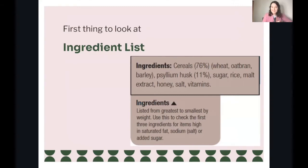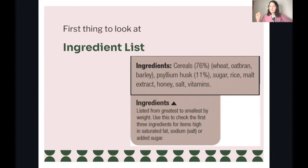Here's the ingredients list. I'm sure this looks familiar whenever you've bought something packaged. It should have an ingredients list on there. In this example, you can see cereals at 76%. The very first thing listed is always the highest quantity, and then it goes down from there. In this example, vitamins is the least amount of ingredients.